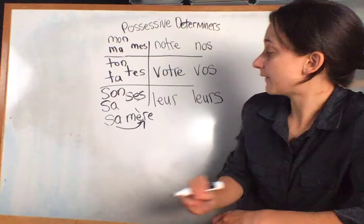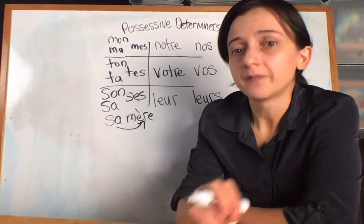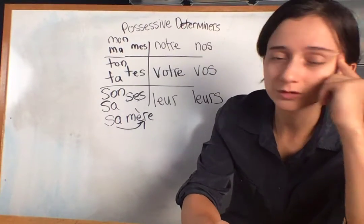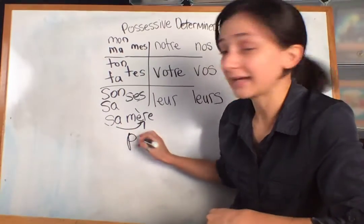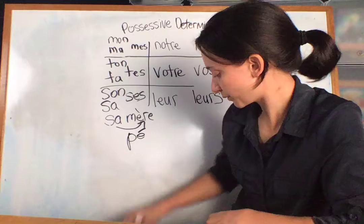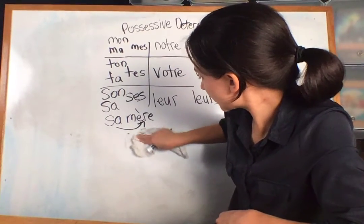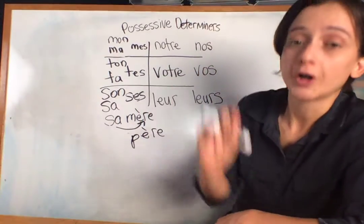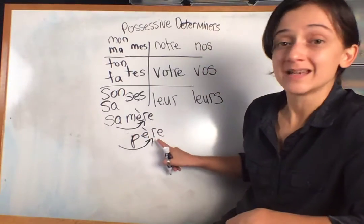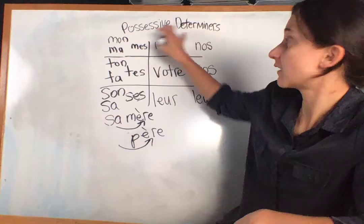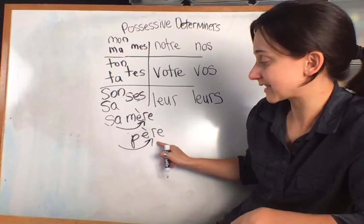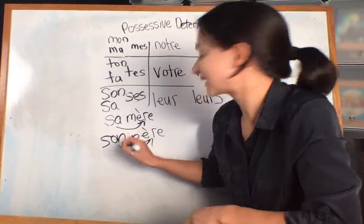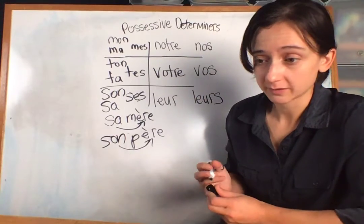So here's the other trick. If I said her father, your English brain is going to say, oh, sa, her. That's feminine. But no, no, no. We need to look at père. Père, which is masculine. So even though I'm trying to say her father, I need to focus on the noun I am describing. As long as we think of our possessive determiners as adjectives, I'm describing this. That means my adjective must agree or match. So even though I want to say her father, I am saying son père.